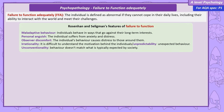Personal anguish is where we can see the individual is suffering from anxiety and distress as a result of their inability to cope with day-to-day life. They may want to interact with the world, but struggle to even get out of bed and ready. Observer discomfort is where an individual's behaviour causes distress to those around them, such as poor personal hygiene and not respecting other people's personal space. Irrationality is where we find it difficult to understand the motivation behind someone's behaviour, and this is linked to unpredictability and unexpected behaviour.